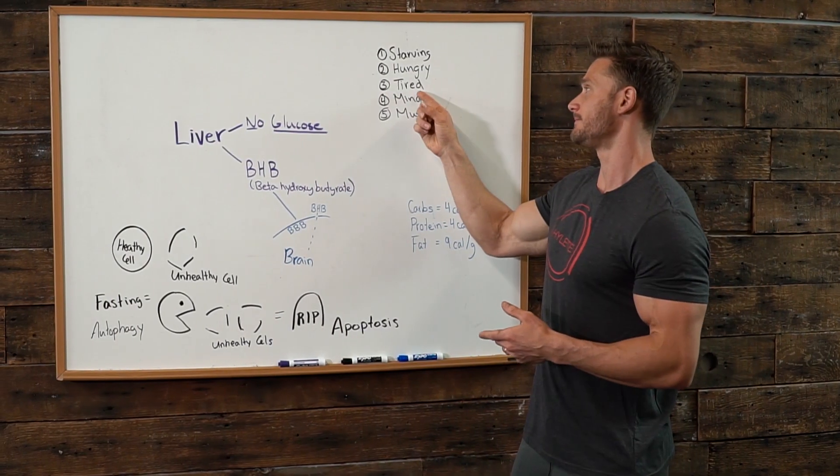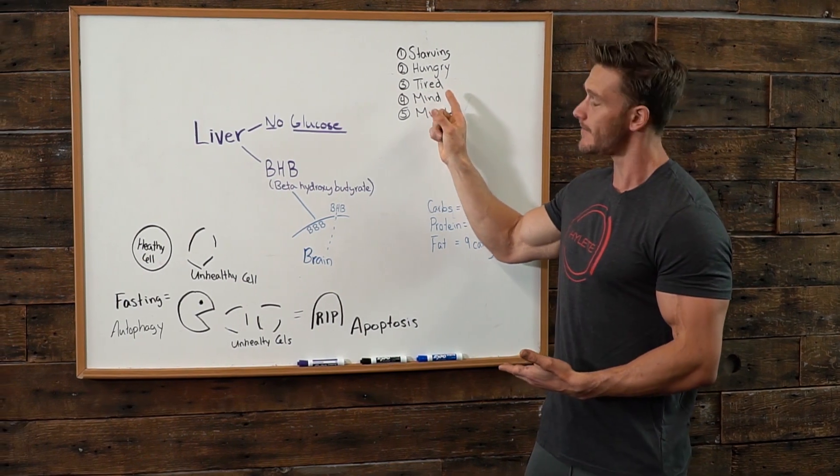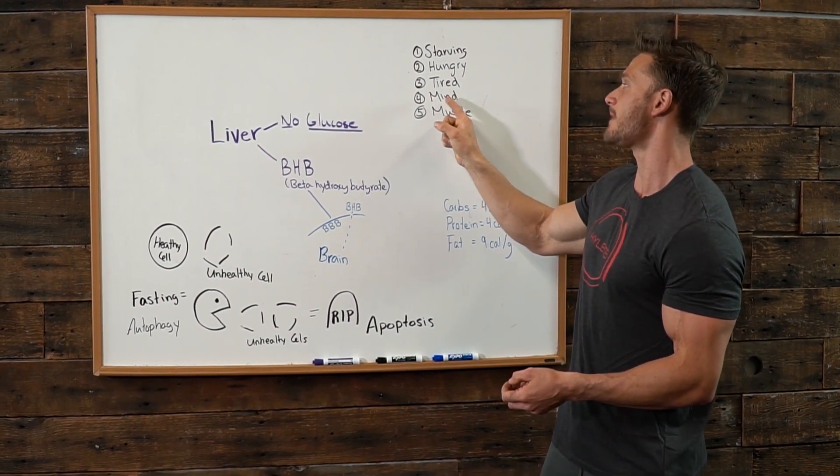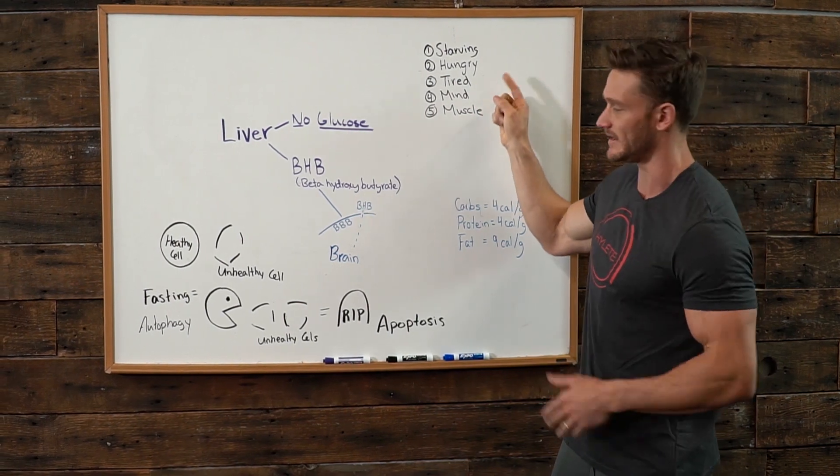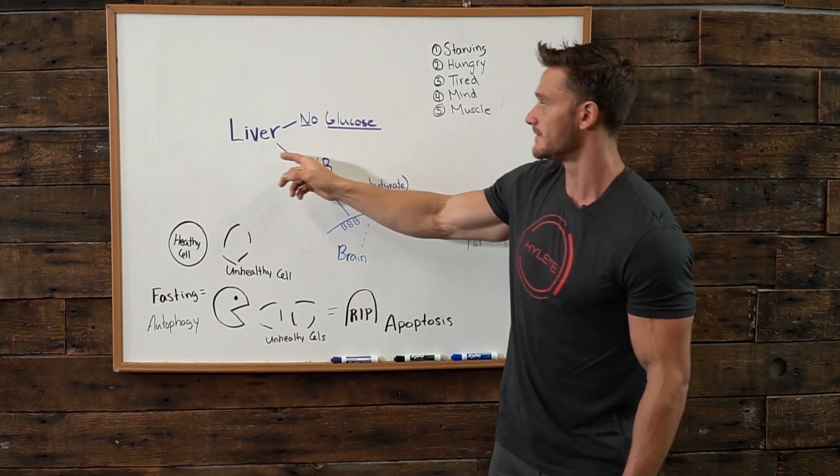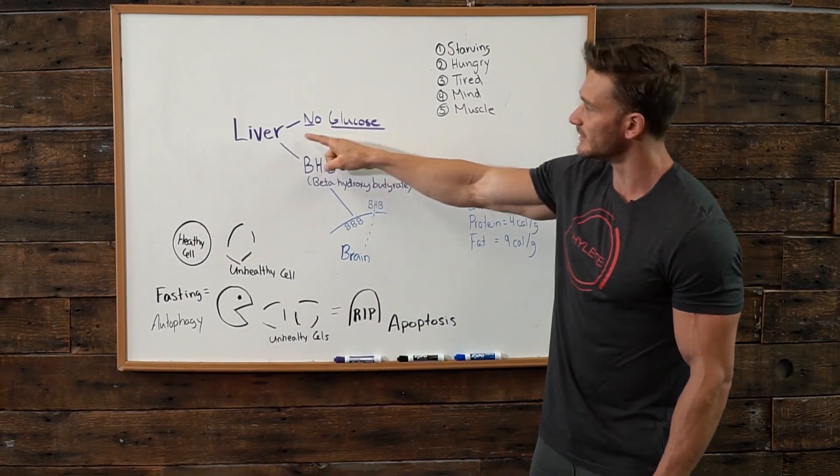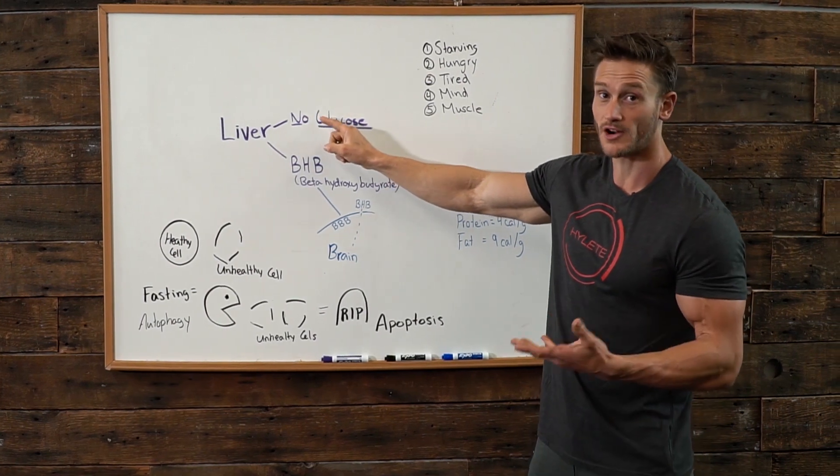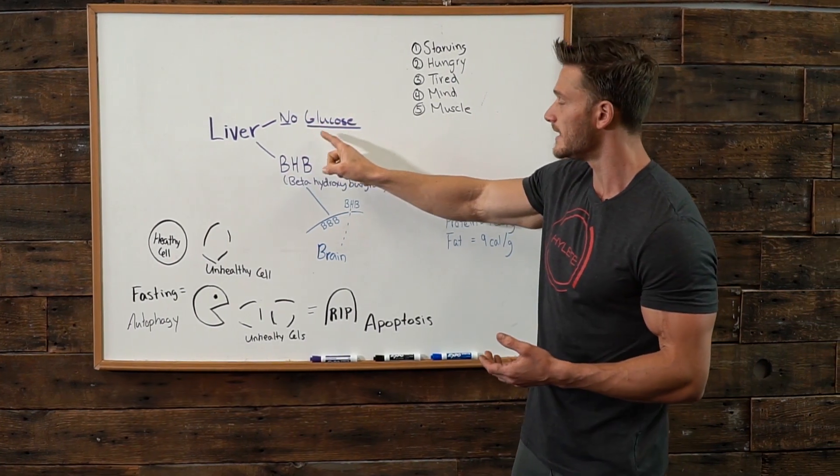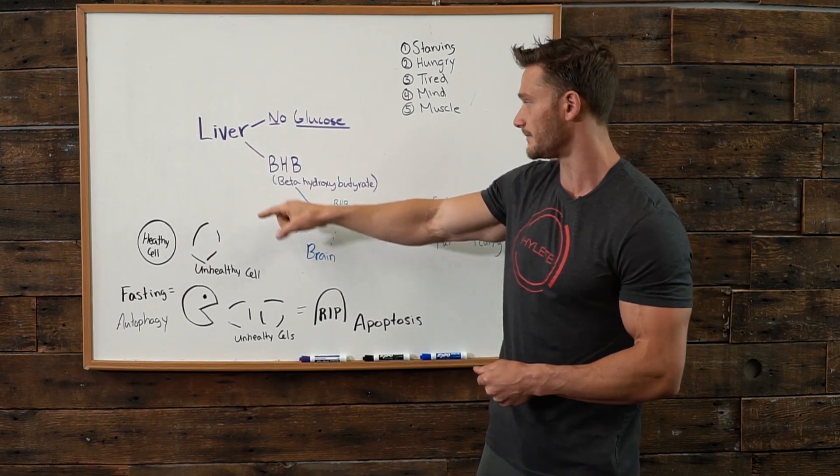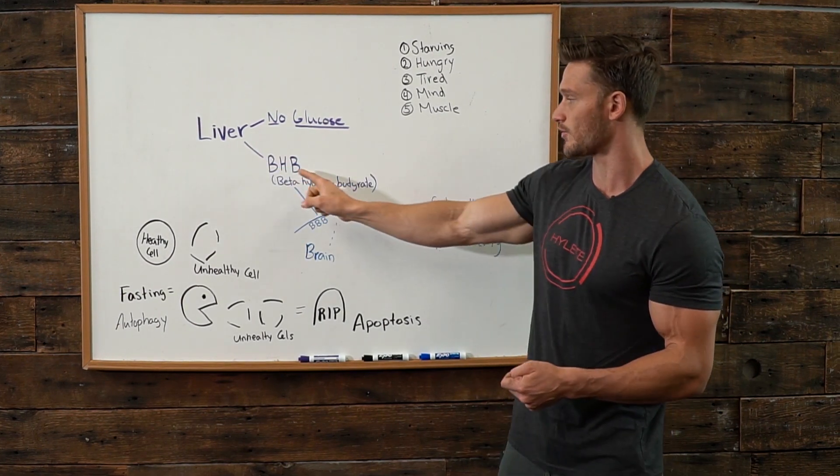Then we hear this one. You're going to be tired all the time. And I'm going to couple it with this one right here too, which is the fact that your mind isn't going to work well because they kind of go hand in hand. Look at this. Here we have the liver. When the liver doesn't have glucose, which is regular carbohydrates and regular sugar, it produces those ketone bodies I talked about, known as beta-hydroxybutyrate or BHB.